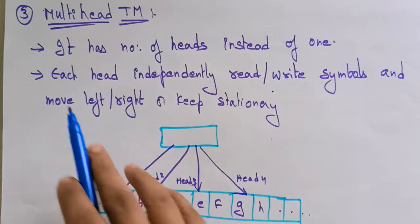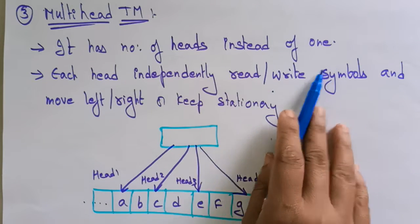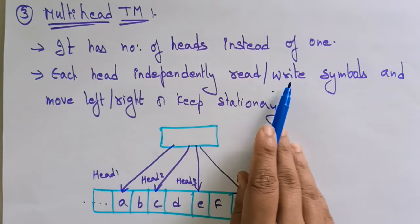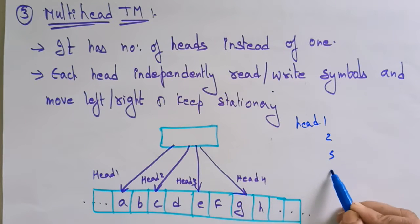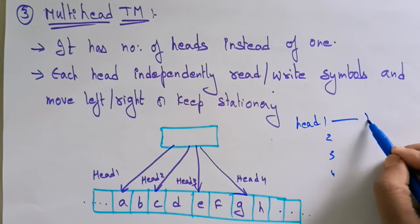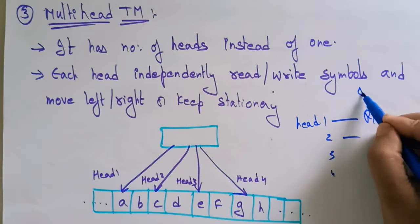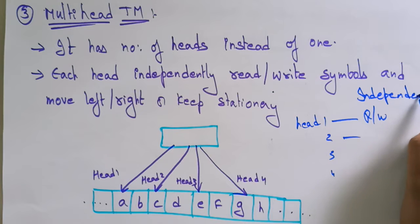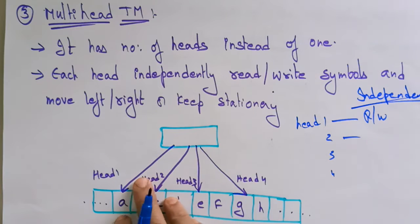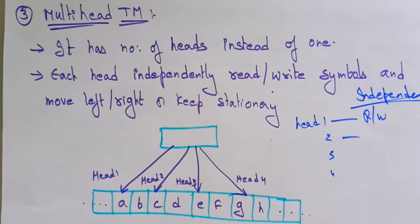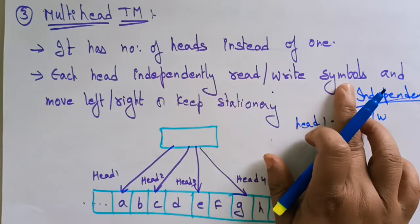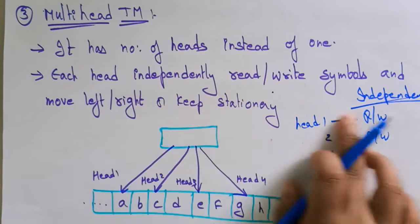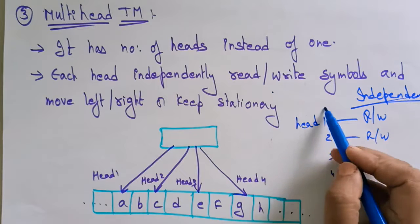So let's see how it works. It has a number of heads instead of one head. Each head independently reads or writes. So whatever heads you are taking — head 1, head 2, head 3, head 4 — everything independently reads or writes. There is no dependent relationship between these heads; there is no compromise because every head independently reads or writes symbols. And each head can move towards the left or right or keep stationary — everything is independent.